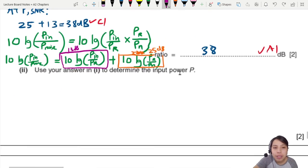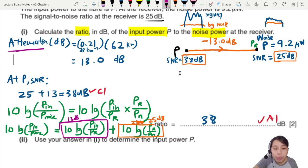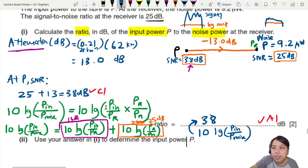Last part - use your answer to determine the input power. We haven't found it yet! Oh no, we found signal-to-noise ratio. This is just a ratio, a log ratio. 10 log (Pin/Pnoise) - we only found this, that's all. We did not find anything else. So I'm gonna write that down so we can remember what that is. This 38 dB is really the ratio, 10 log (Pin/Pnoise). We haven't found Pin yet. This is just a ratio.